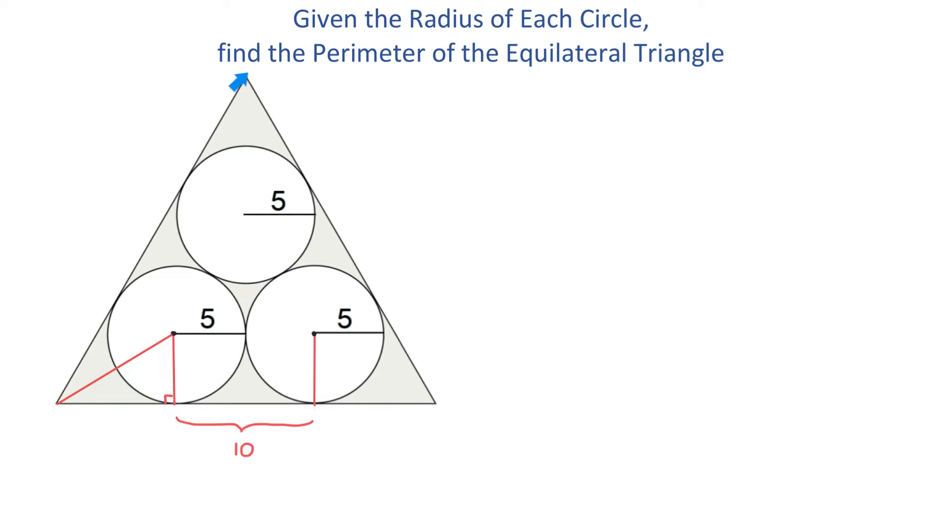Because we have an equilateral triangle, each angle measures 60 degrees. Because this angle measures 60 degrees, half of it will measure 30 degrees.